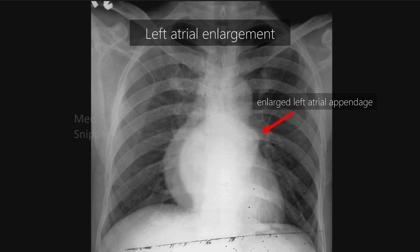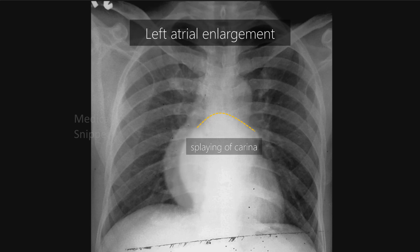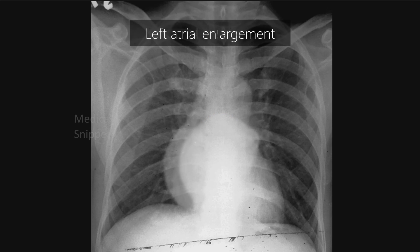The enlarged left atrium pushes the left main bronchus upwards, resulting in splaying of the carina. One more method to measure left atrial enlargement is the distance from the midpoint of the left main bronchus to the right border of the left atrium, and this distance should be more than 7 cm.